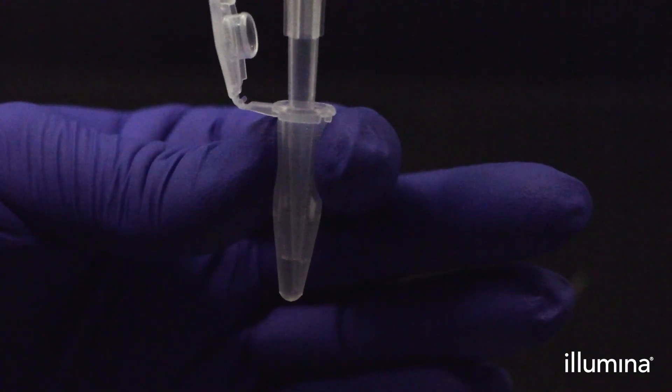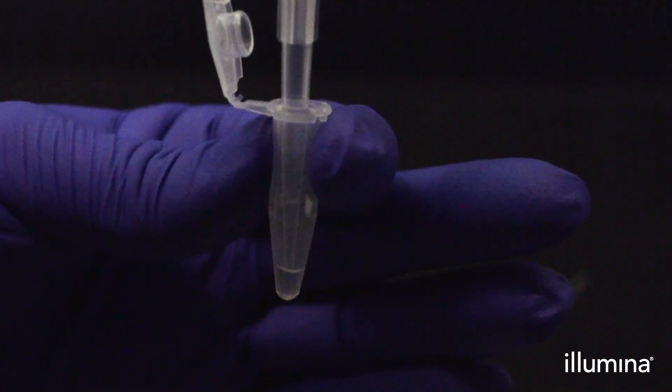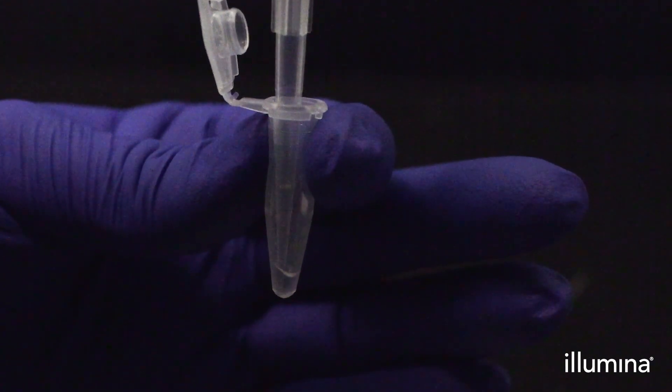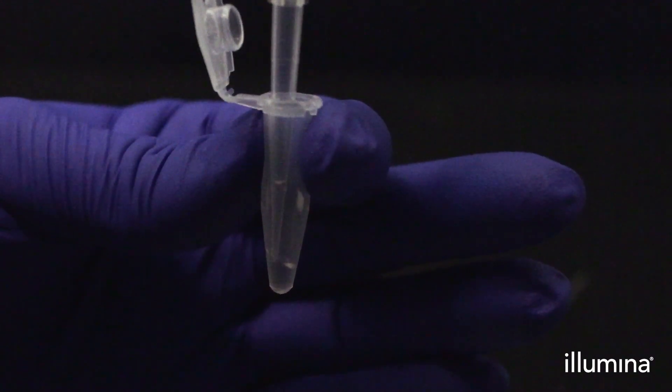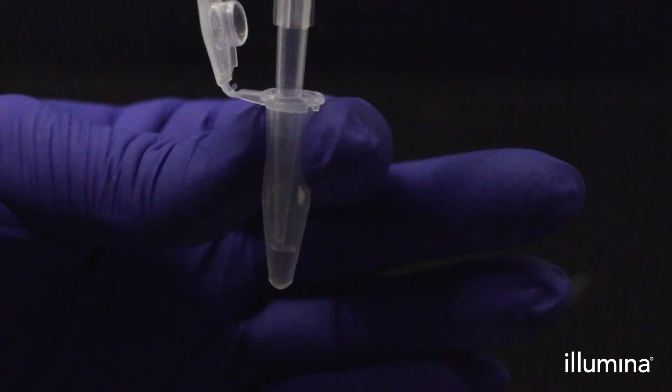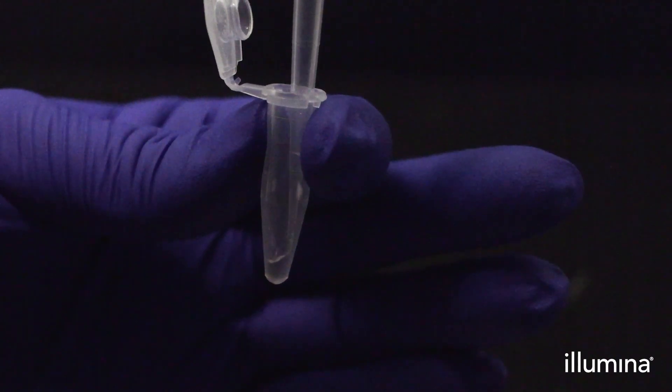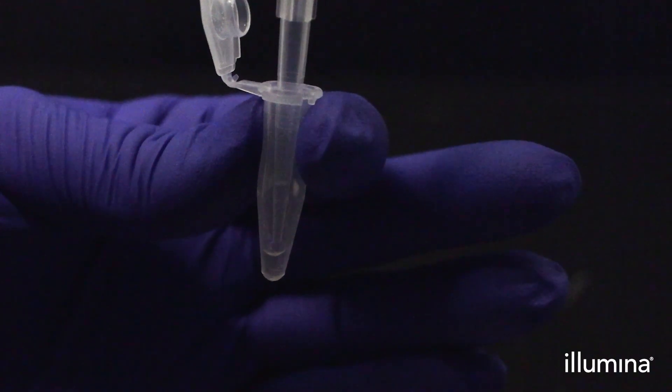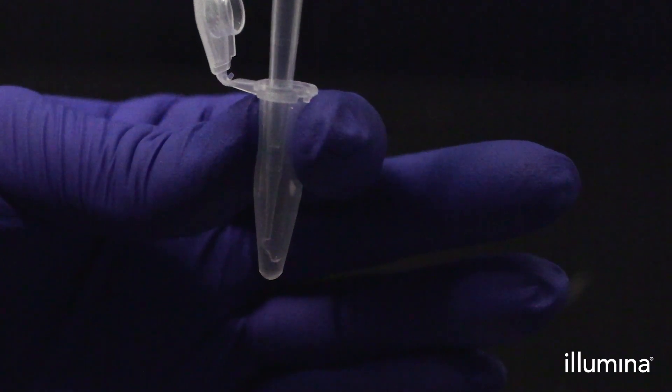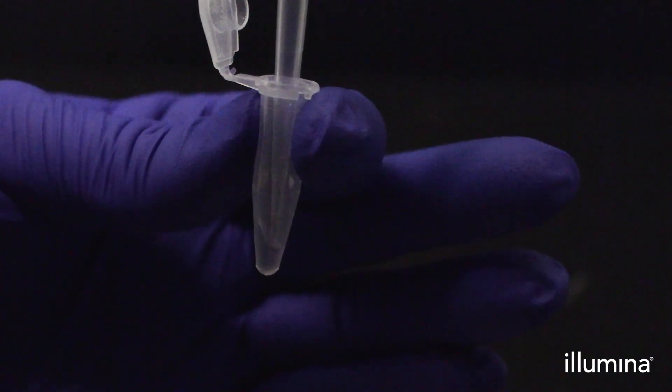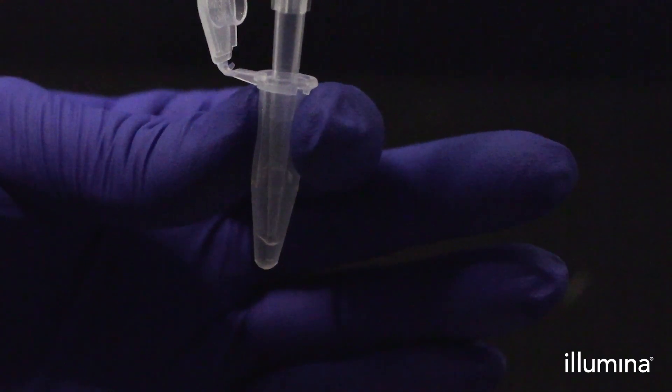Then, pipette mix each sample 10 times using a standard-bore low-retention P200 tip to ensure even dispersal of the sample. It is important to pipette slowly to the first stop only to avoid creating foam or excessive bubbles. This step should be completed with the pip tubes in the four-tube stand. We are not showing that here so proper mixing can be observed.